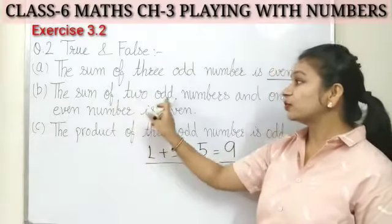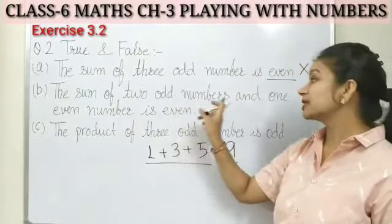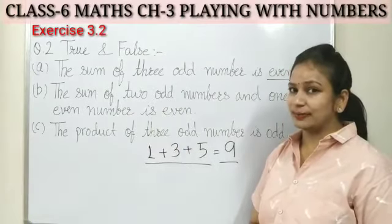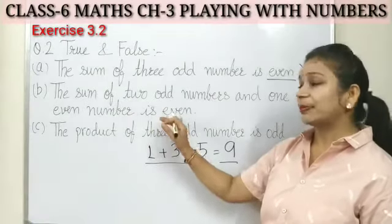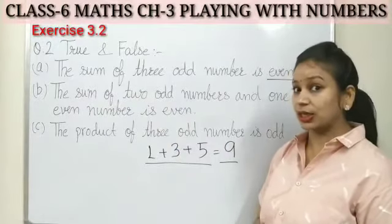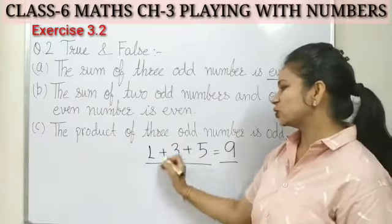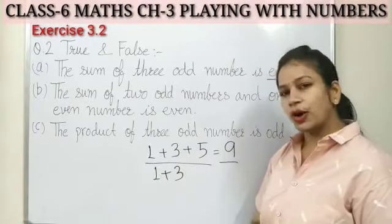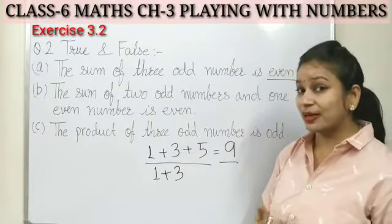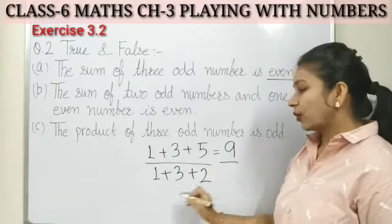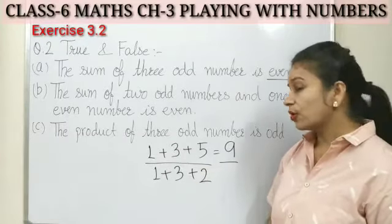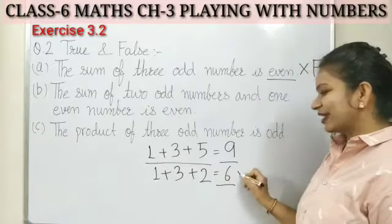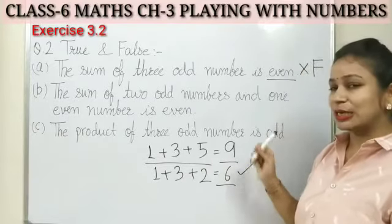Next, statement B: the sum of two odd numbers and one even number. Two odd numbers and one even number — what is the sum? Let's see: one plus three gives us two odd numbers. One even number, say two. Three plus one is four, and four plus two is six. Six is an even number, so this is a true statement.